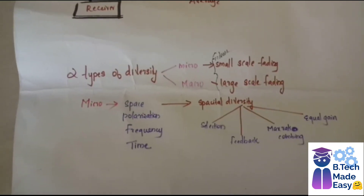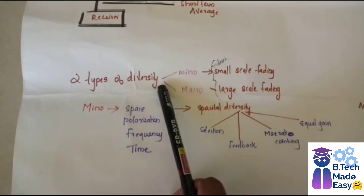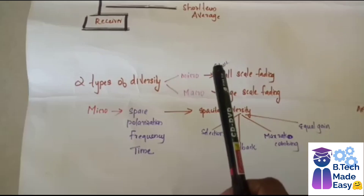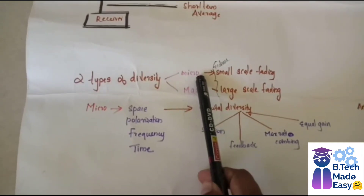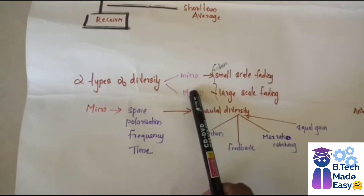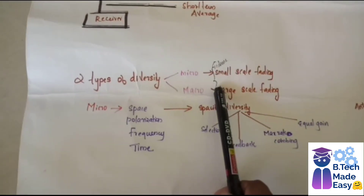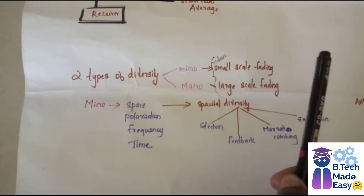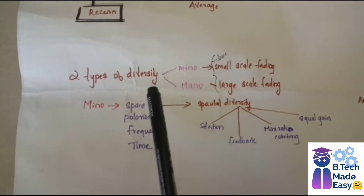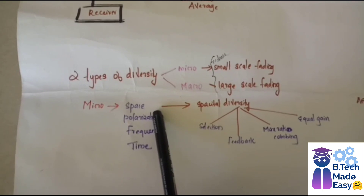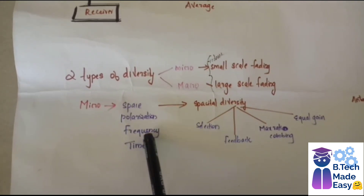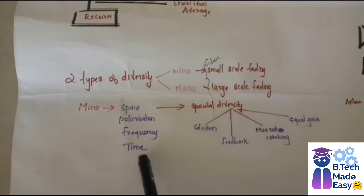There are mainly two types of diversity techniques: micro techniques and macro techniques. Micro techniques are used to reduce small-scale fading and macro techniques are used to reduce large-scale fading. Micro techniques are of four types: spatial diversity, polarization, frequency, and time.